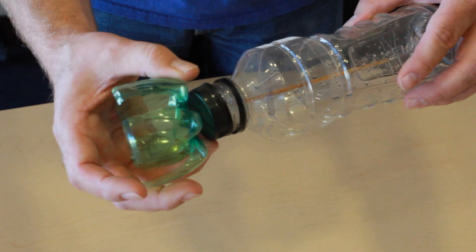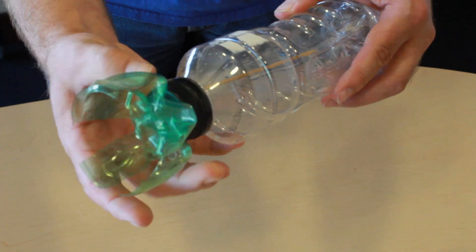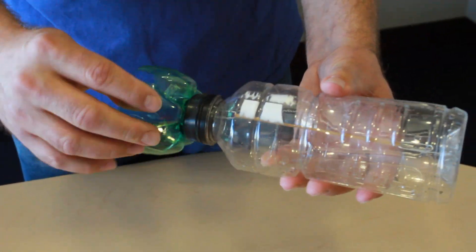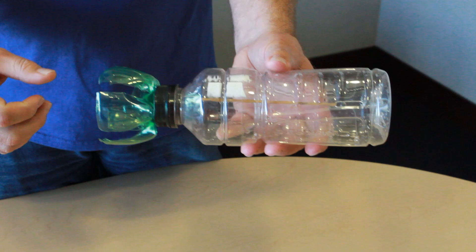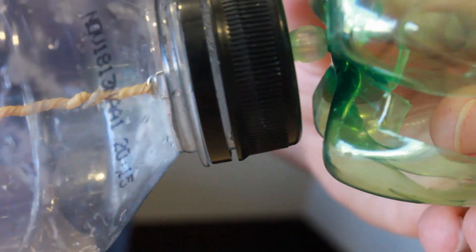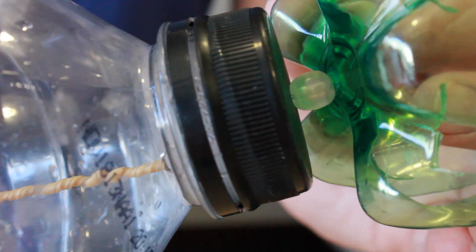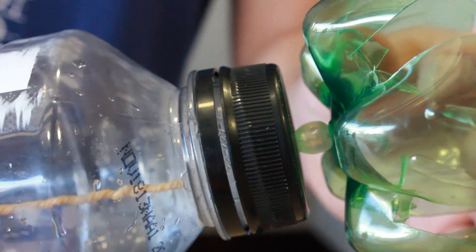Now all we have to do is screw the lid onto the bottle, and we're almost done. Our propeller was a little too close to the lid, so we put in a bead as a spacer. That way it spins a little bit easier.